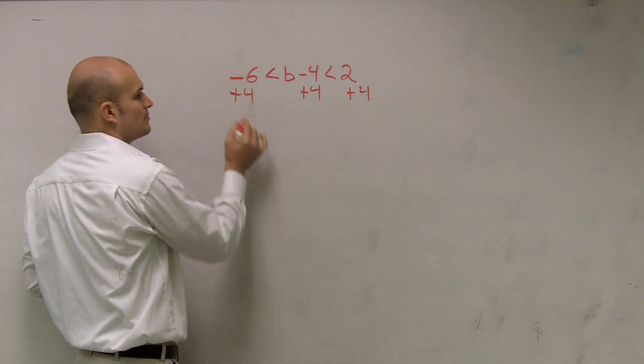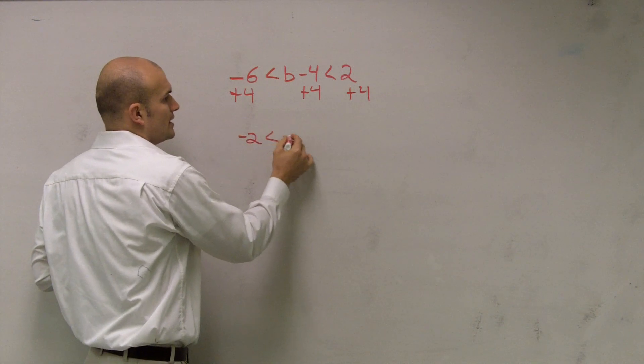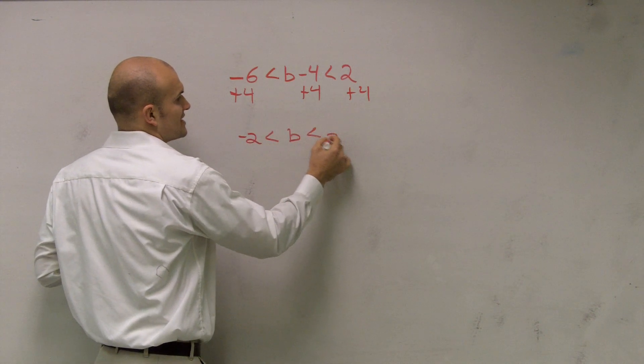So therefore, negative 6 plus 4 is a negative 2 is less than b, which is now less than 6.